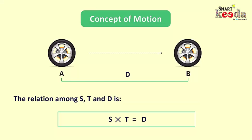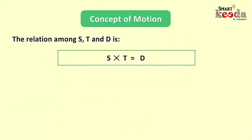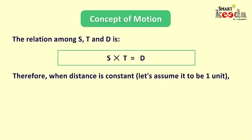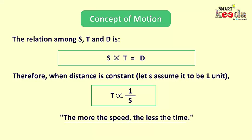Now we have this relationship that says speed into time is equal to distance. Therefore when distance is constant, here constant means something that never changes, let's assume the distance to be one unit, so time taken will be 1 upon S, or we can say time is inversely proportional to speed, which further means the more the speed, the less the time, or vice versa.